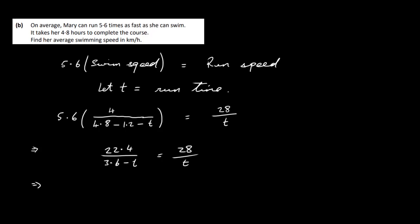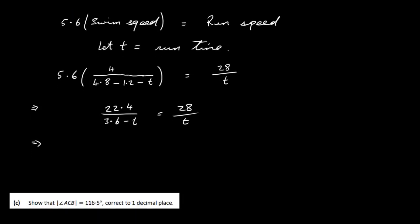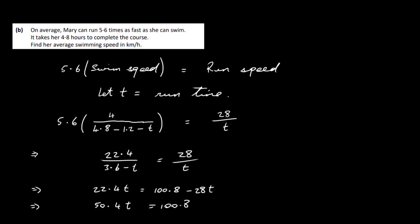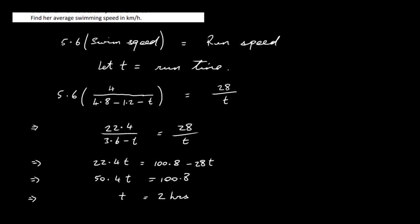Cross-multiplying gives 22.4T equals 28 times 3.6, which is 100.8, minus 28T. That gives 50.4T equals 100.8, so T equals 100.8 divided by 50.4, which is 2 hours. That's her run time — the time it takes to complete the run.